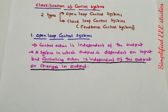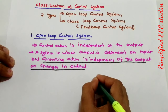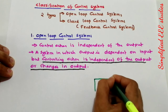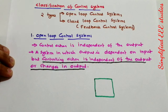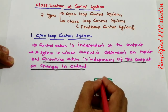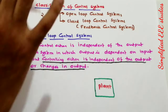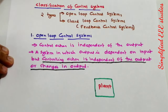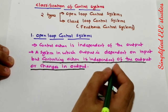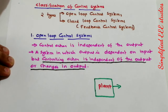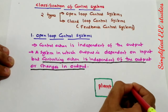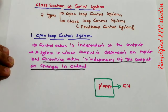Let us consider the block diagram. With the help of a block diagram, I can easily explain what we mean by open loop control system. We have a plant or process. The output will be the controlled variable — I will write CV for controlled variable.